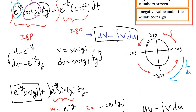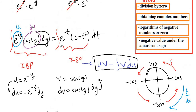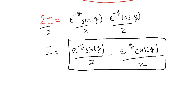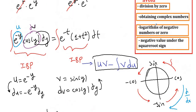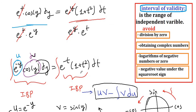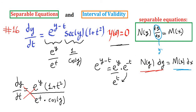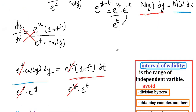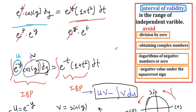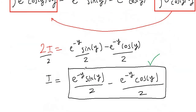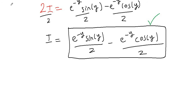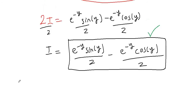We are done with the left-hand side. Now we take care of the right-hand side, then set them equal, plug in the initial condition, and solve for the constant C to get our implicit solution. The next integration by parts we perform is for e^(-t) times (1 plus t squared) dt.